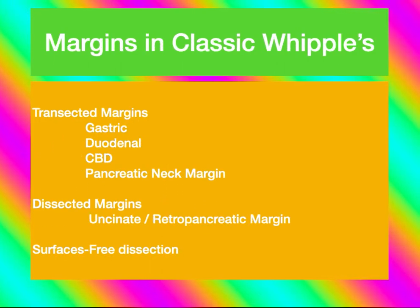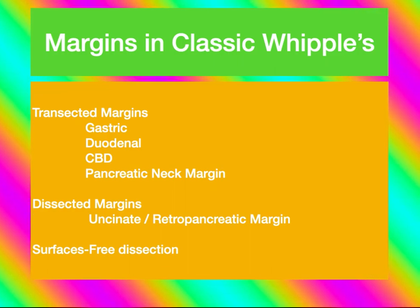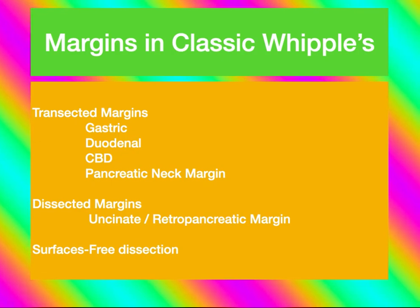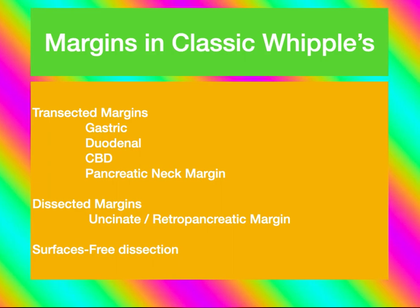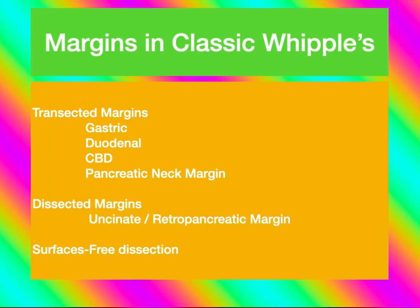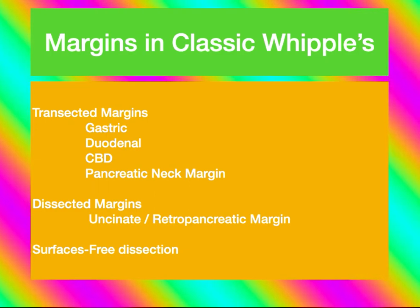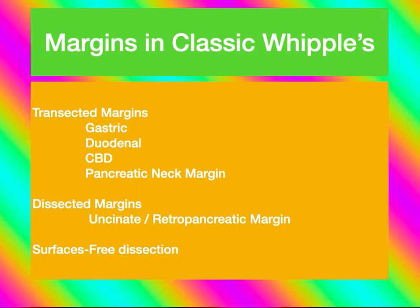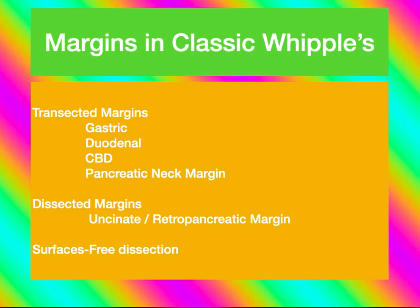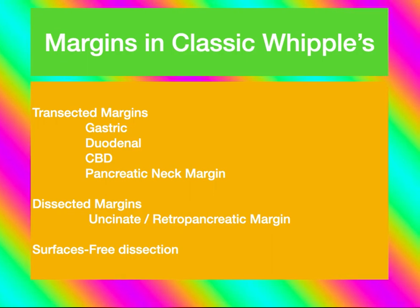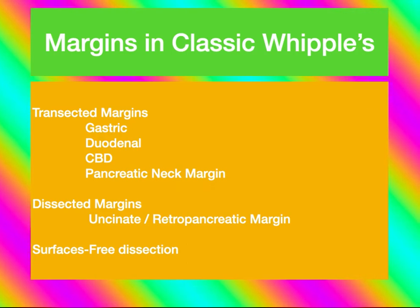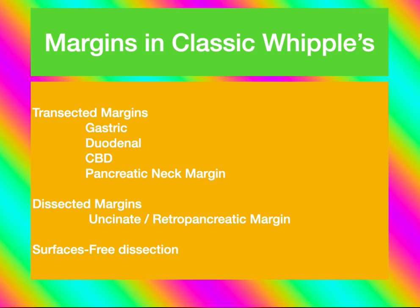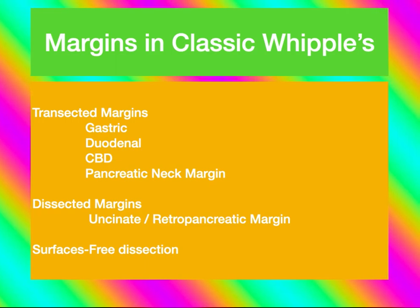The margins of a classical Whipple's specimen include two types of margins and one surface type. The first type is the transected margin: the gastric margin, duodenal resected margin, CBD resected margin, and pancreatic neck margin where the pancreas is transected from the body. The second type is the dissected margin, which in Whipple's is the uncinate or retro-pancreatic margin — where the pancreas is dissected from surrounding soft tissue. Additionally, there are two surfaces: the anterior and posterior surface of the pancreas.